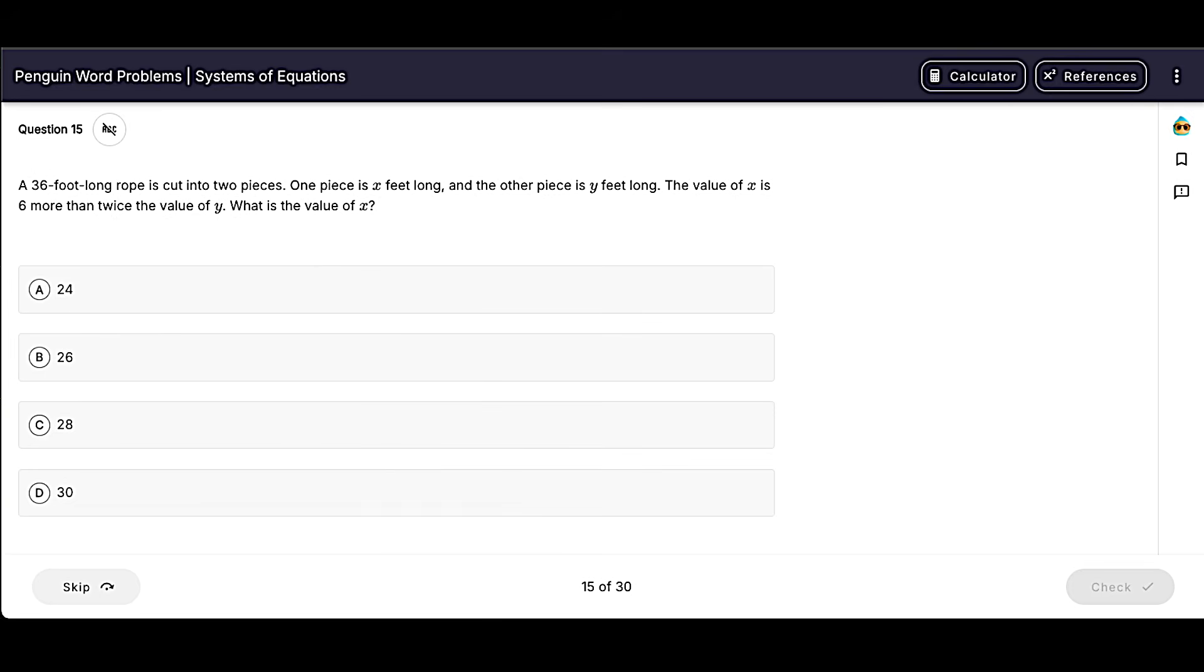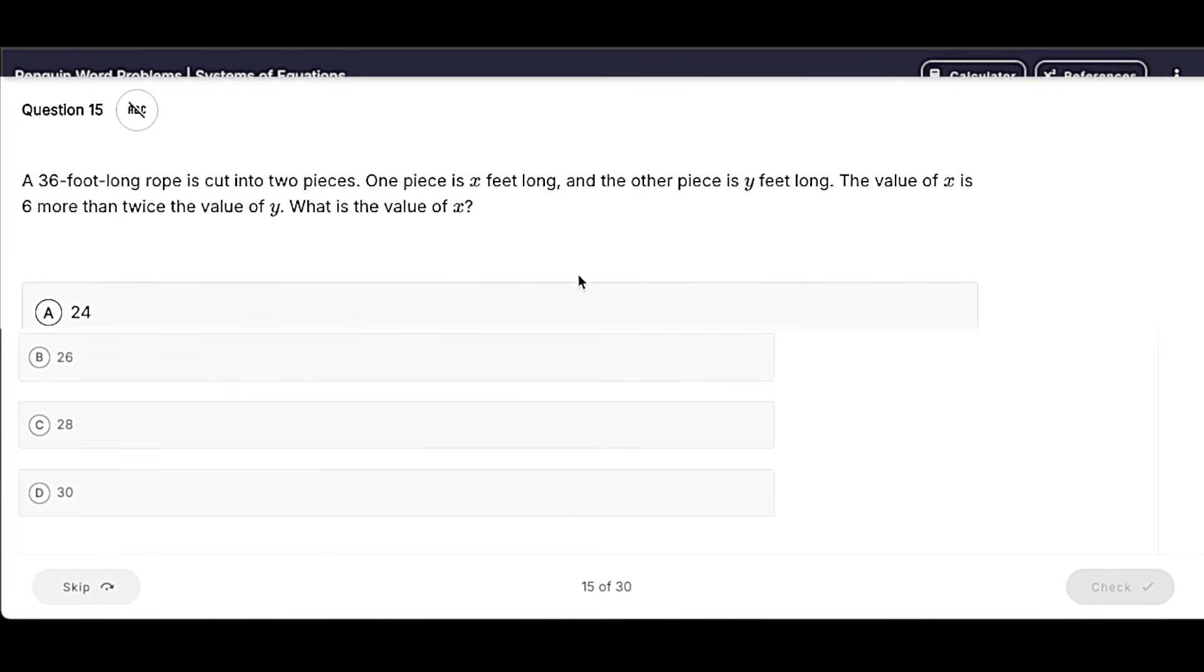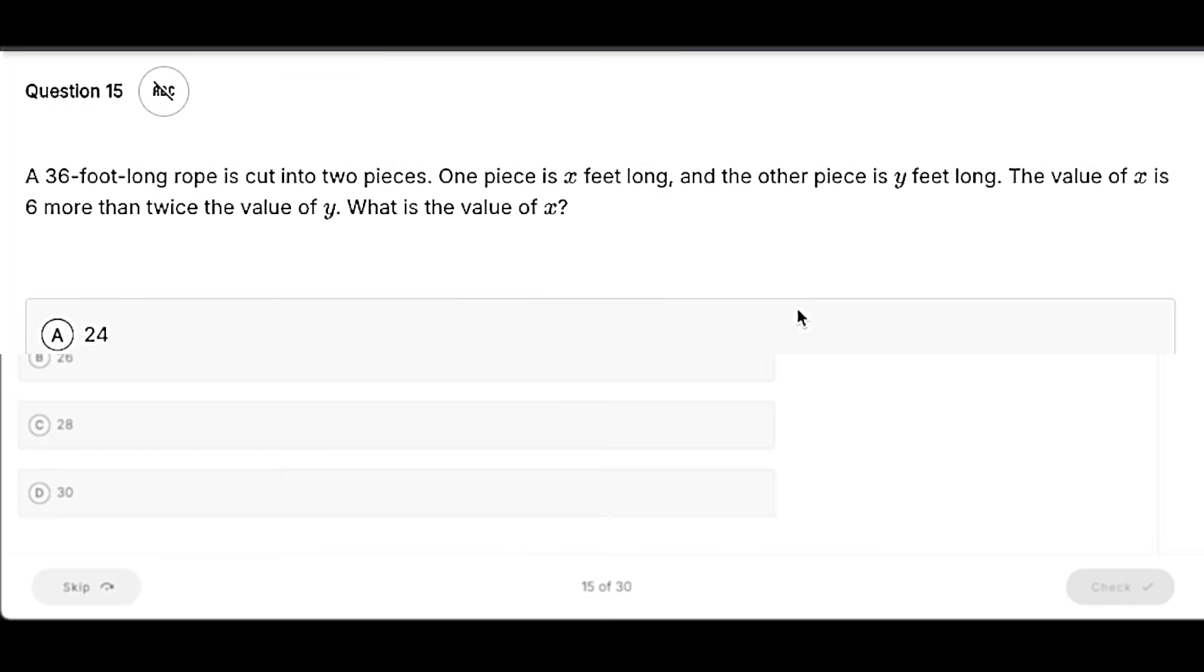Just remember, we're looking for items, value, and comparisons. But let's go ahead and take a look. So this one says we've got a 36-foot long rope cut into two pieces. One piece is X feet long and the other piece is Y feet long.